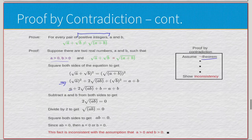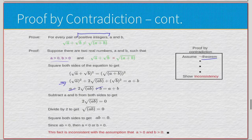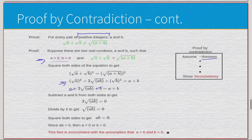Subtracting a and b from both sides leaves 2√(ab) = 0, and dividing by 2 gives √(ab) = 0, meaning ab = 0. Since ab = 0, either a = 0 or b = 0. But we're dealing strictly with positive integers, so neither a nor b can be zero — this is a logical inconsistency. Therefore the contradiction will never be true, and the original theorem must be true.